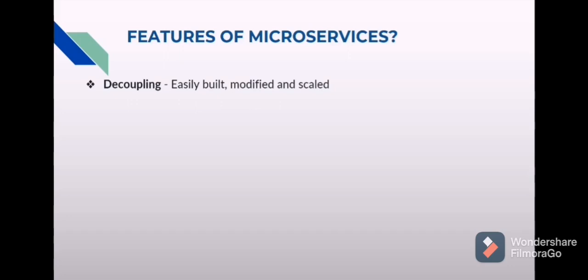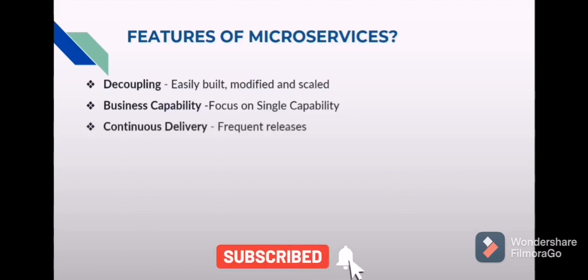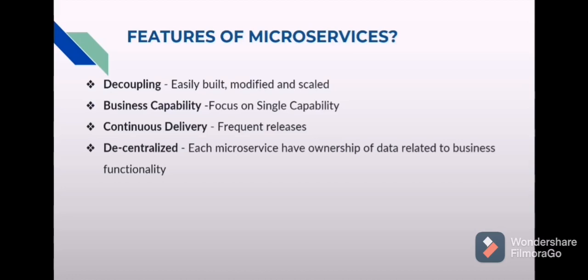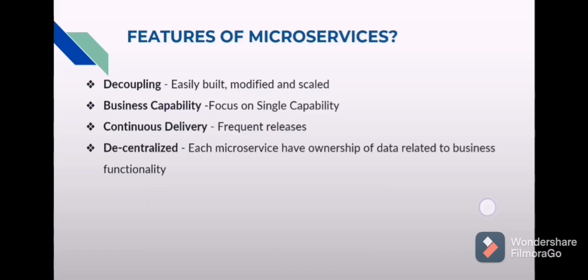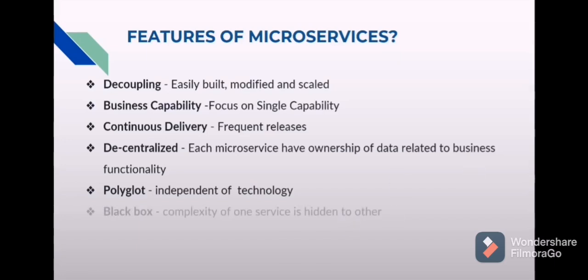What are the features of microservices? First, decoupling — since microservices are independent of each other, they can be easily built, modified, and scaled. Then business capability — each microservice should have only one business goal, focusing on a single capability. Then continuous delivery — by using microservice architecture we can do faster development and frequent releases. Then decentralized — each microservice has ownership of data related to its business functionality; even if two microservices share a database, both should have ownership. Then polyglot — independent of technology. Then black box — the complexity of one service is hidden from others.